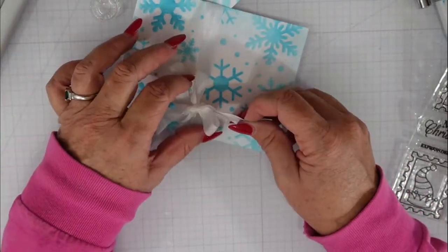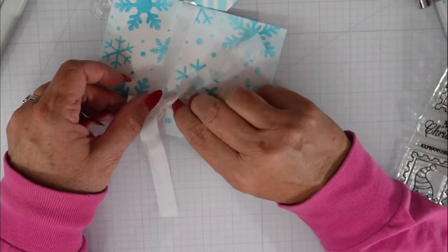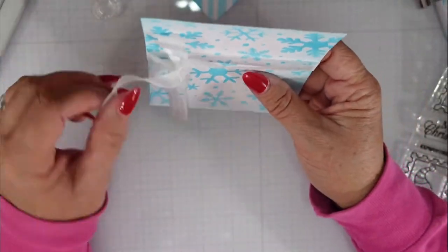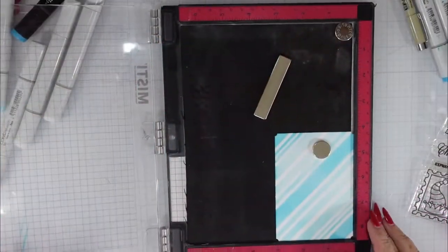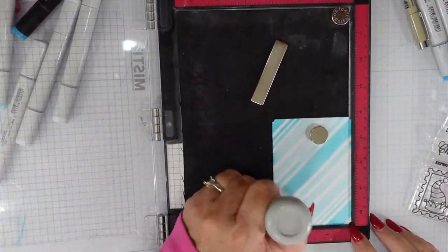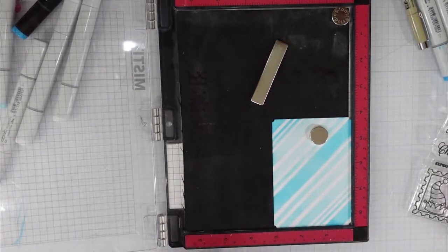Here I'm just tying a bow with some seam binding, so I'm going to have a bow on the left side of this card panel. And I really love the way that it kind of steps up the prettiness on this card.